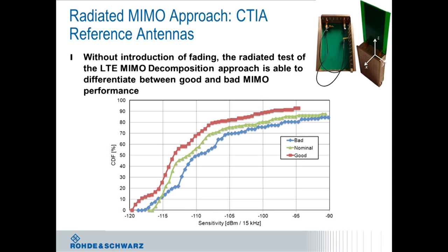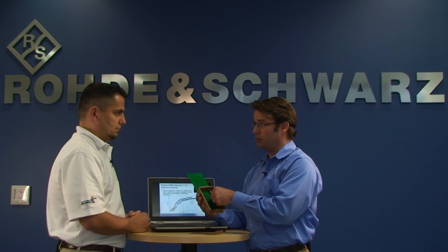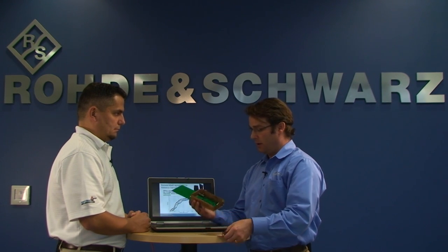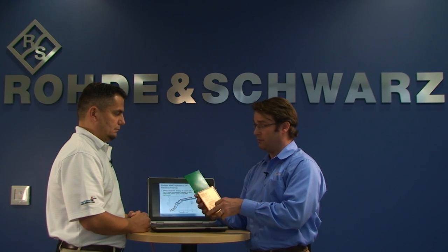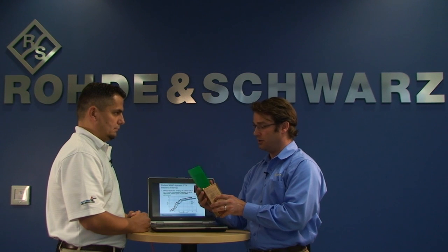This slide talks about the measurement example for the radiated approach, where we basically took a CTI reference antenna — or a set of CTI reference antennas. These antennas are external antennas designed on a PCB, connectorized with conducted cables that plug into the conducted ports of the device under test. Afterwards, you close the lid with the device inside, connected to the external set of reference antennas.